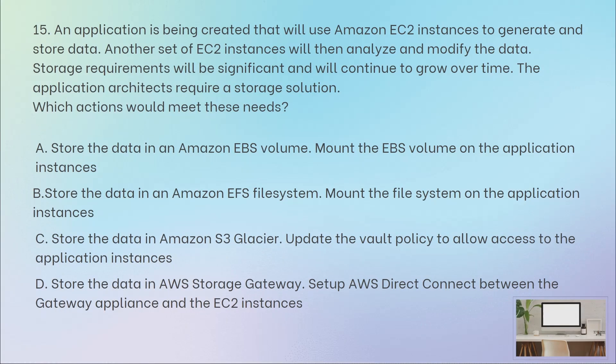EFS is a simple, scalable, fully managed elastic file system used for AWS cloud services. It is built on demand, growing to petabytes without disrupting applications — growing and shrinking automatically as you add and remove files. EFS supports NFS protocol, and multiple EC2 instances can access an EFS file system at the same time, providing a common data source for workloads and applications running on more than one instance. So EFS is the best choice because it can be mounted on multiple EC2 instances and accessed simultaneously.